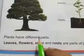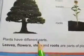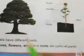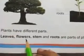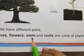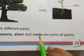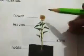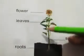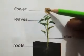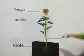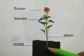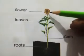Plants have different parts. The parts of a plant are leaves, flower, stem, and roots.